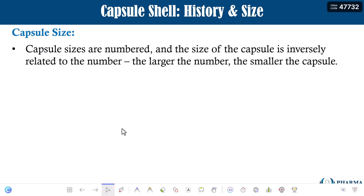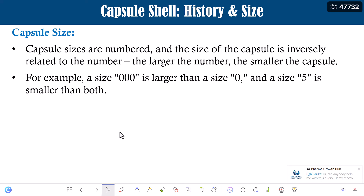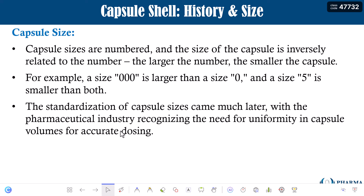Capsule sizes are numbered and the size of the capsule is inversely related to the number — meaning the larger the number, the smaller the capsule size; or the smaller the number, the greater the capsule size. For example, a size 000 or triple zero is larger than size 0, and size 5 is smaller than triple zero. The standardization of capsule sizes came much later with the pharmaceutical industry recognizing the need for uniformity in capsule volumes for accurate dosing.